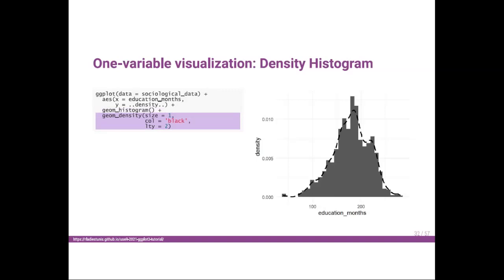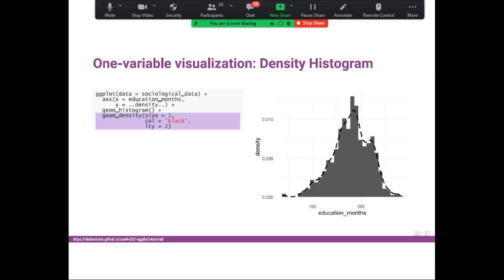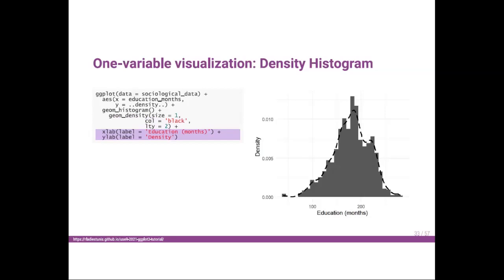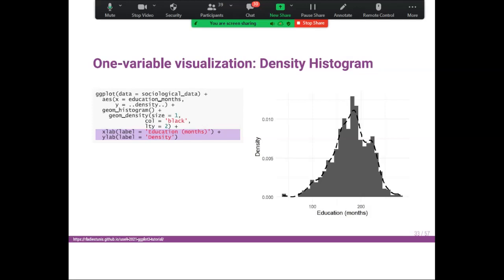Now let's add the geom_density() line to this histogram to see the distribution's density. I call geom_density(), specifying size for the line width, color = 'black', and lty = 2 to get a dashed line. Then I update my axis labels: xlab() with label = 'Education in Months' and ylab() with label = 'Density'.